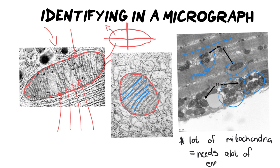There are many tissues that need a lot of energy. One is muscles, and two would be your digestive system. As you progress through life sciences, you will note the kinds of tissues that require more mitochondria than average.